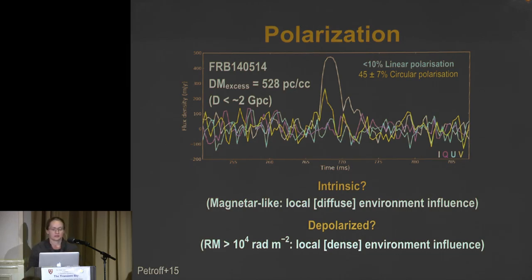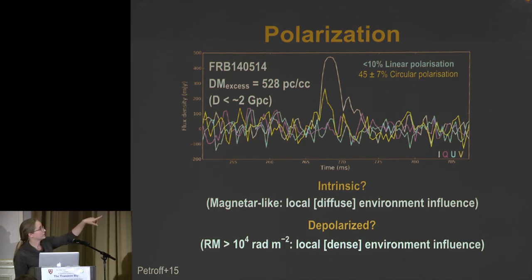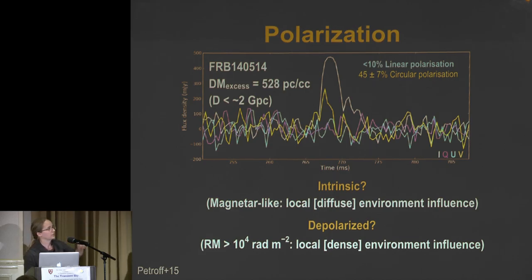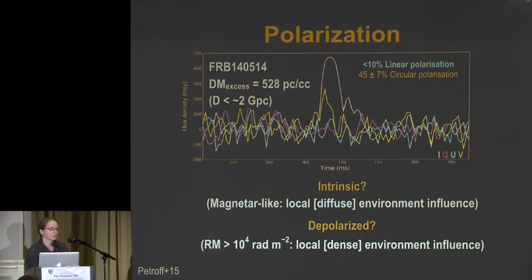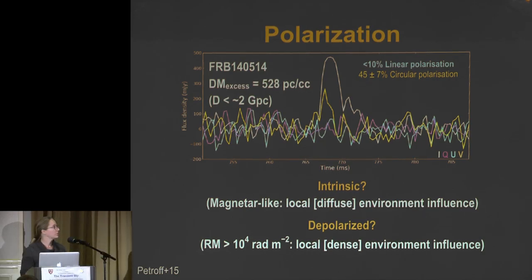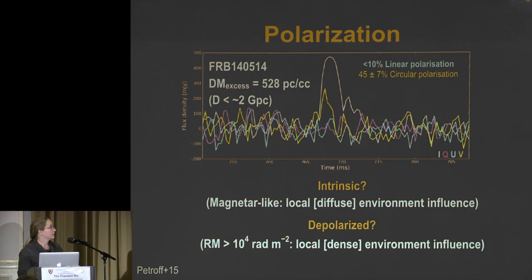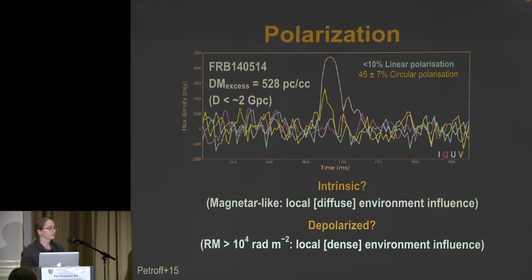The first published polarization light curve shows Stokes I in white, linear polarizations in purple and blue, and circular polarization in yellow. Circular polarization was detected whereas linear polarization was not. Two interpretations exist: first, the source is intrinsically circularly polarized like magnetars occasionally are, suggesting a magnetar-like source within a relatively diffuse local environment. Alternatively, the burst could be highly linearly polarized but experiencing depolarization, requiring an enormous rotation measure of 10 to the 4 radians per square meter.